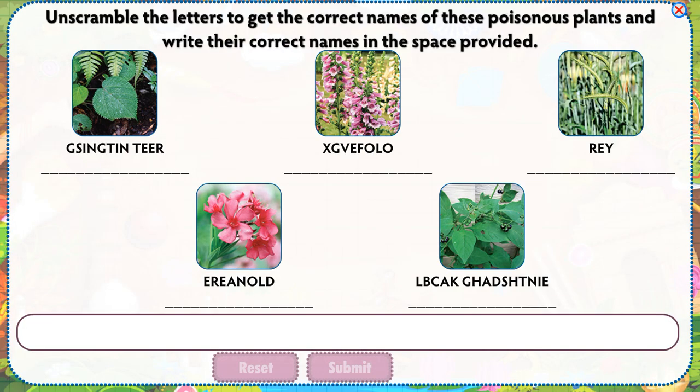Unscramble the letters to get the correct names of these poisonous plants and write their correct names in the space provided.